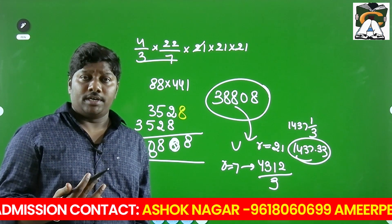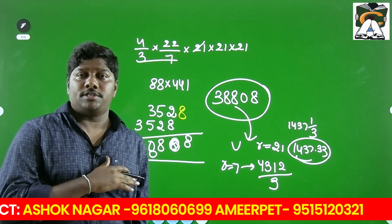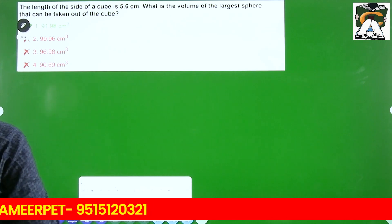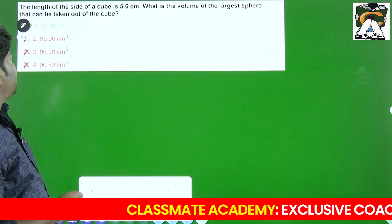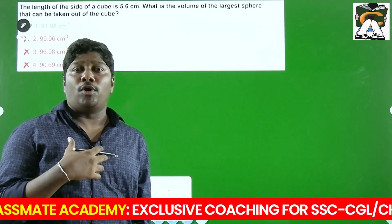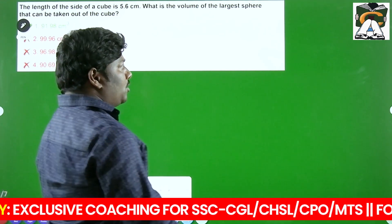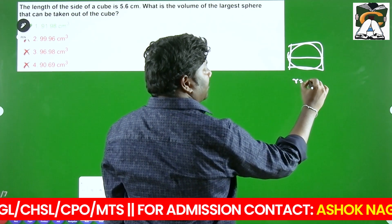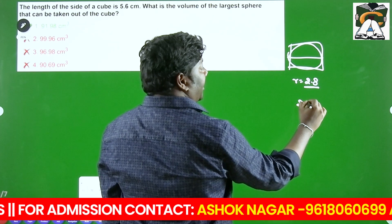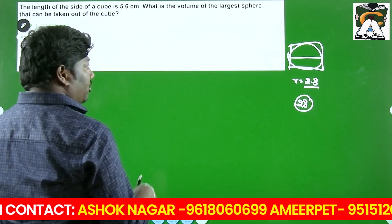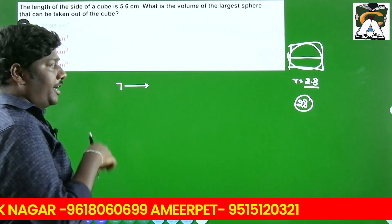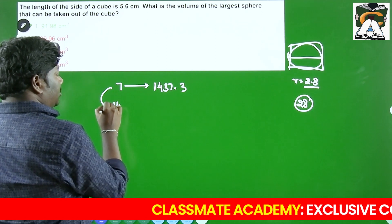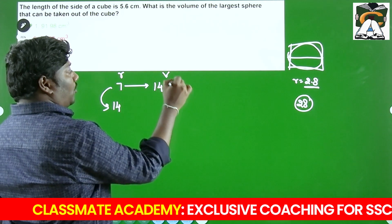We will now try some problems that are very difficult if you calculate directly, but very easy with these tricks. Look at the first problem: the length of the side of a cube is 5.6 cm. What is the volume of the largest sphere that can be taken out of the cube? The largest sphere has diameter 5.6, so radius = 2.8. Ignoring the decimal for now, this is like radius 28, which is double of 14. When radius is 7, volume is 1437.33; when radius doubles to 14, volume becomes 8 times.